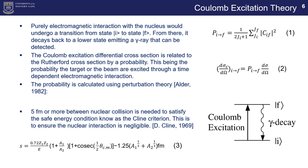So the Coulomb excitation differential cross section is related to the Rutherford differential cross section by the probability, and that can be seen as equation two on the right hand side. This probability being the probability of the target or the beam, in our case, are excited through a time-dependent electromagnetic interaction. As you can see, the probability is calculated using perturbation theory and that's the solution we get right on top for the probability.